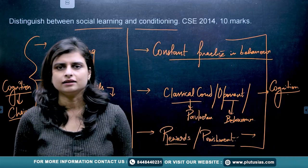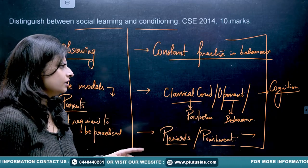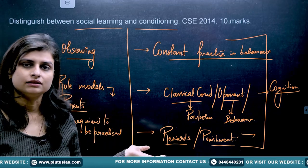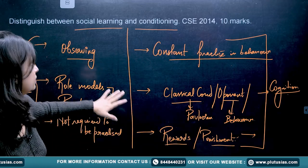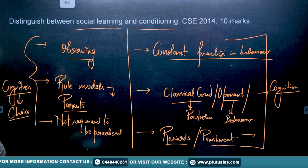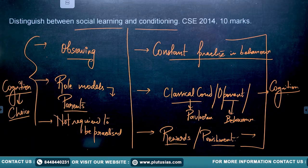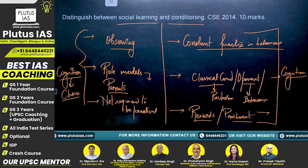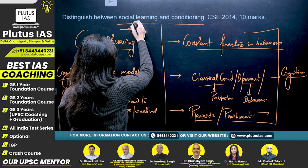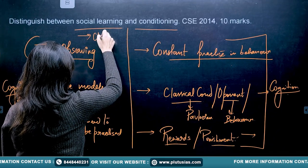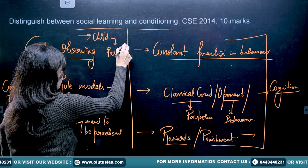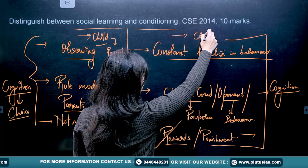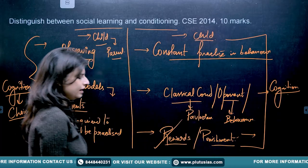In conditioning, cognition is about identifying the rewards and punishments — what the person is being rewarded for and what they are being punished for — and that brings change. For the application part, you can mention the example of a child learning from a parent for social learning, and for conditioning, the child being rewarded or punished for certain behavior.